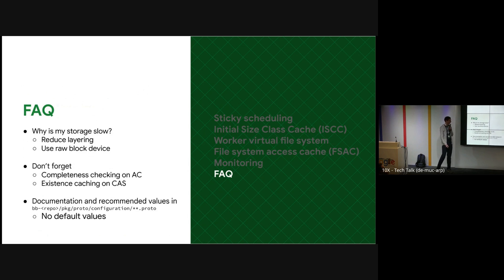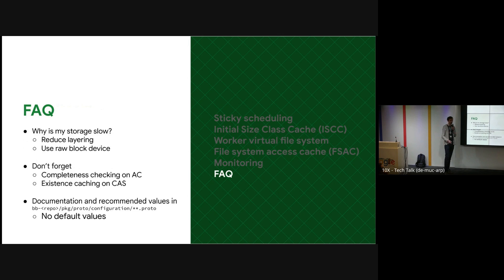Some frequent questions we get in the Slack community: why is my storage slow? The usual answer is you are layering your storage somehow. If you have your remote cache on a network disk, that will be slow — put the cache on the local disk where you run it, and then it gets faster. Use a raw block device and avoid layering a VM on top of Docker or the other way around. Avoid as many layers as possible, and then it will be fast.